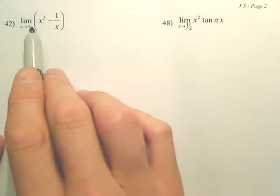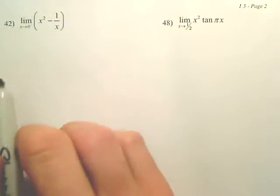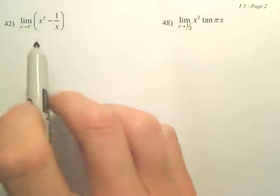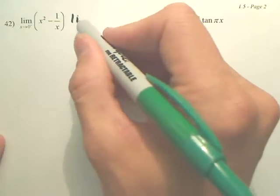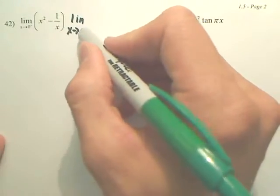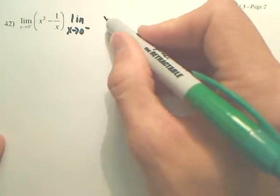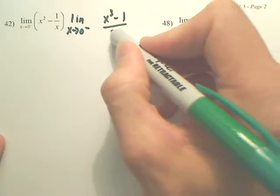The limit of x approaching zero from the negative side of this equation. Now, we could leave it with this equation, but we could also, if you want to, change this equation to x cubed minus 1 over x.